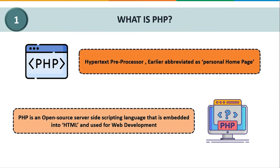Before we get to the execution part of how to use MongoDB with PHP, let us quickly understand what PHP is. PHP is a common open source scripting language popular for web applications. It originally stood for Personal Homepage, but PHP is now a recursive acronym for Hypertext Preprocessor. PHP is a server-side scripting language embedded in HTML in its simplest form, and it allows web developers to create dynamic content and interact with databases.